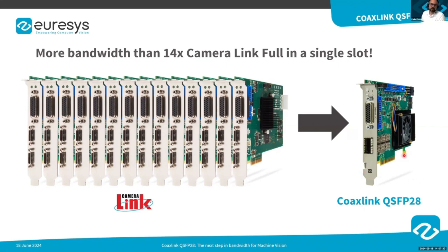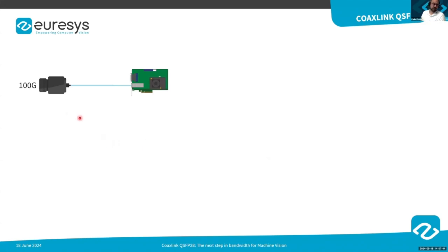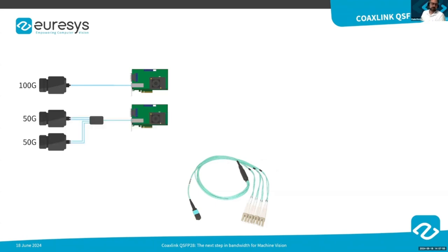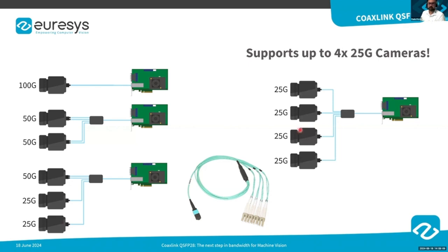In terms of camera support, the Coaxlink QSFP28 supports one 100G camera. For multi-camera applications, we can use a breakout fiber cable that allows us to connect up to two 50G cameras, three cameras where two are 25G and one is 50G, or up to four 25G cameras in a single frame grabber.